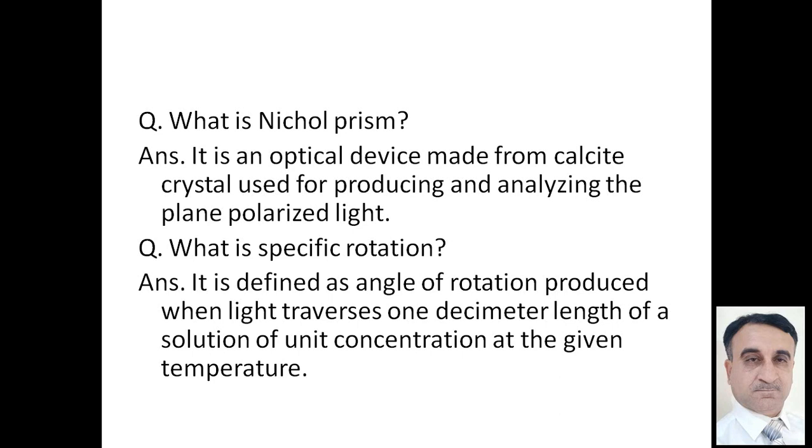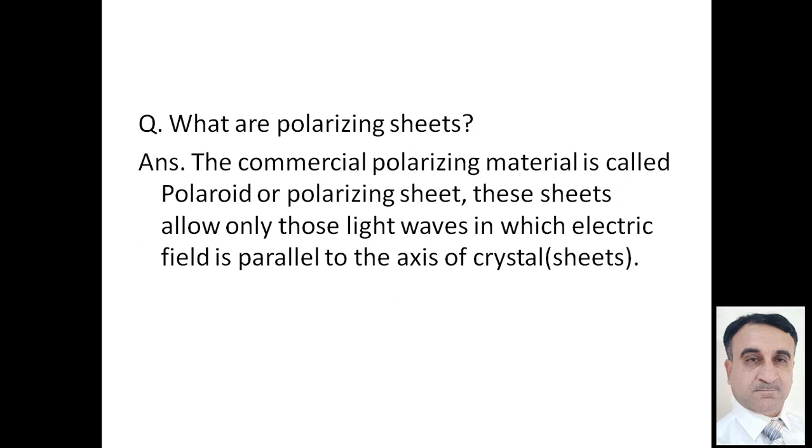What is specific rotation? It is defined as an angle of rotation produced when light traverses 1 decimeter length of solution of unit concentration at the given temperature. If we have a concentration unit and length of the solution we have unit, the rotation angle produced is called specific rotation.